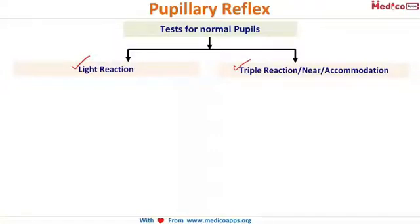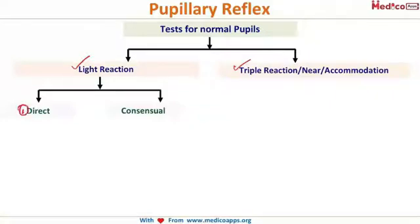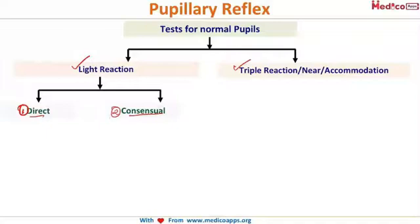We have studied and practiced many times during MBBS that the light reaction has two components: the direct component and the consensual component. Direct means when I throw light on the pupil of the right eye, the pupil constricts — that is the direct light reaction. Consensual means when I throw light on the right eye pupil, the left eye pupil also constricts.